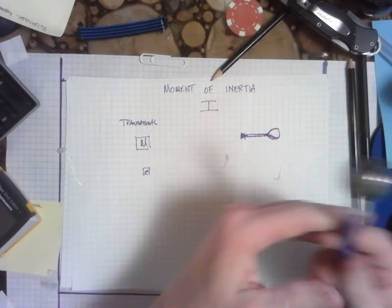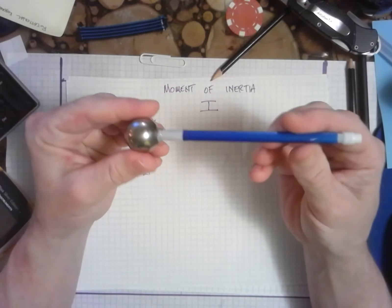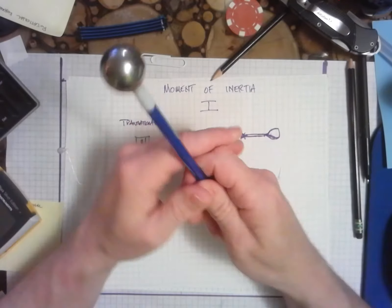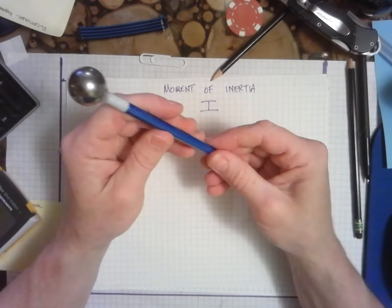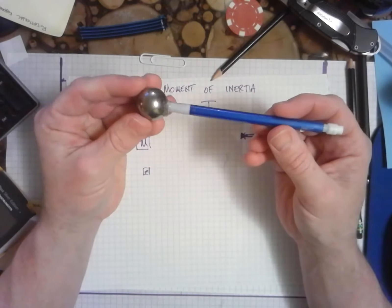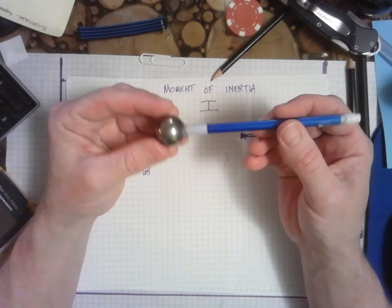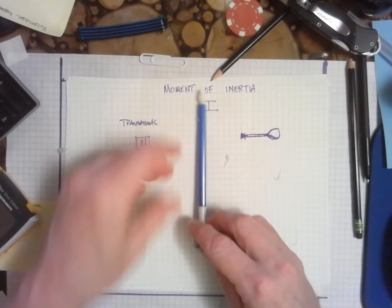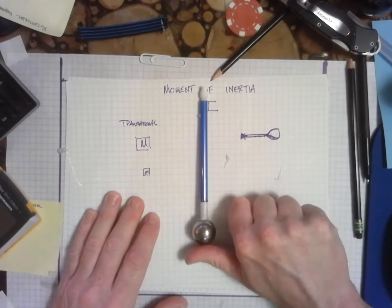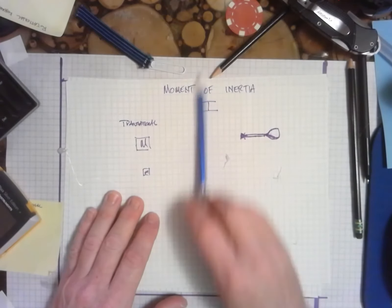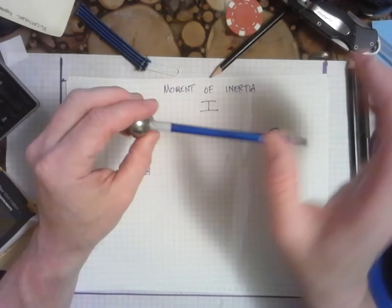Okay, so here's the object in question. It's basically a club, right? A little club. This thing has a certain mass.